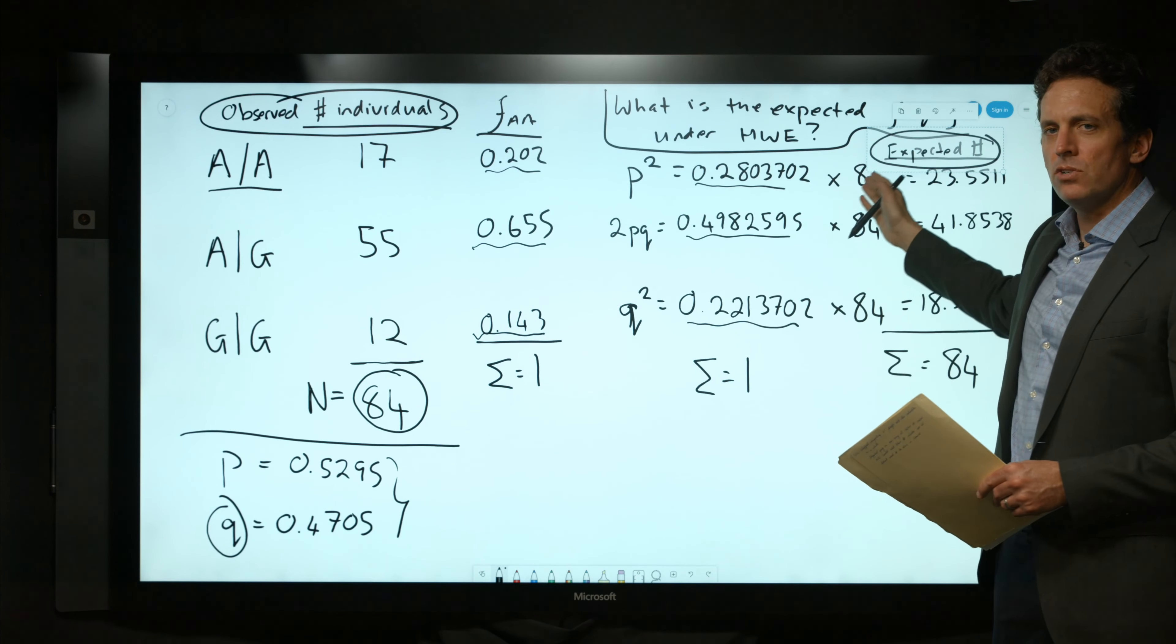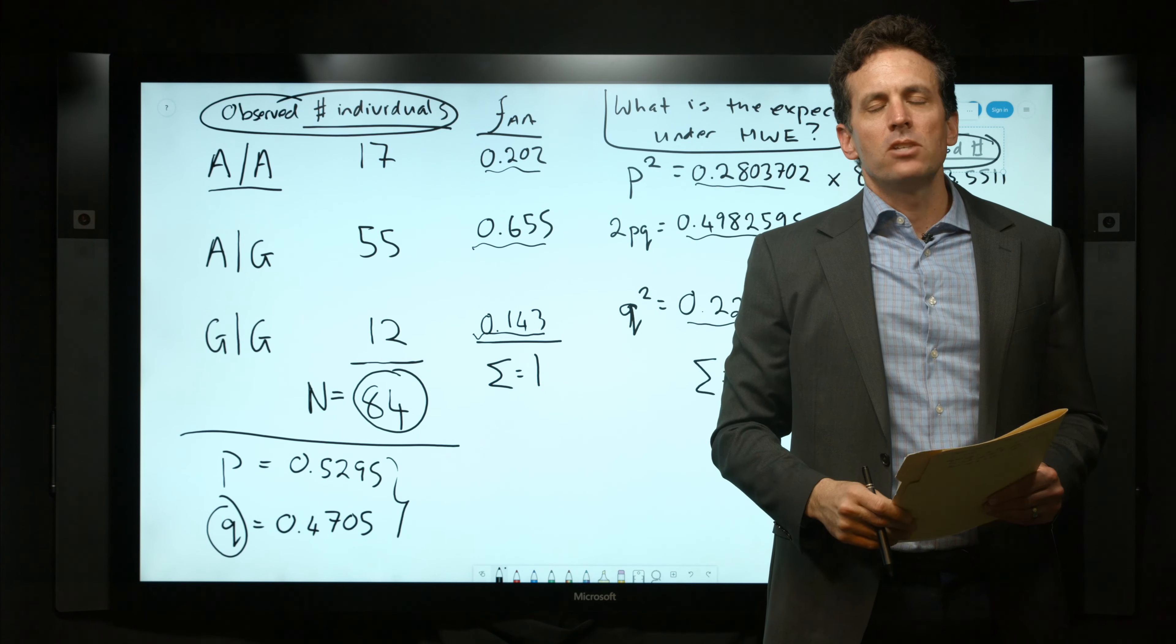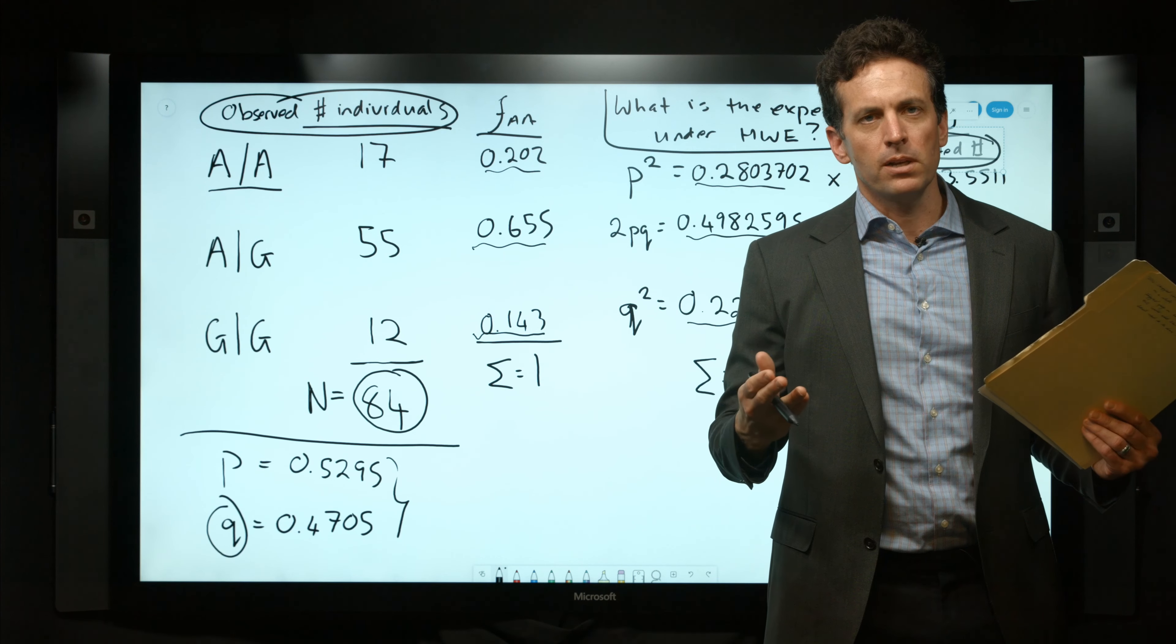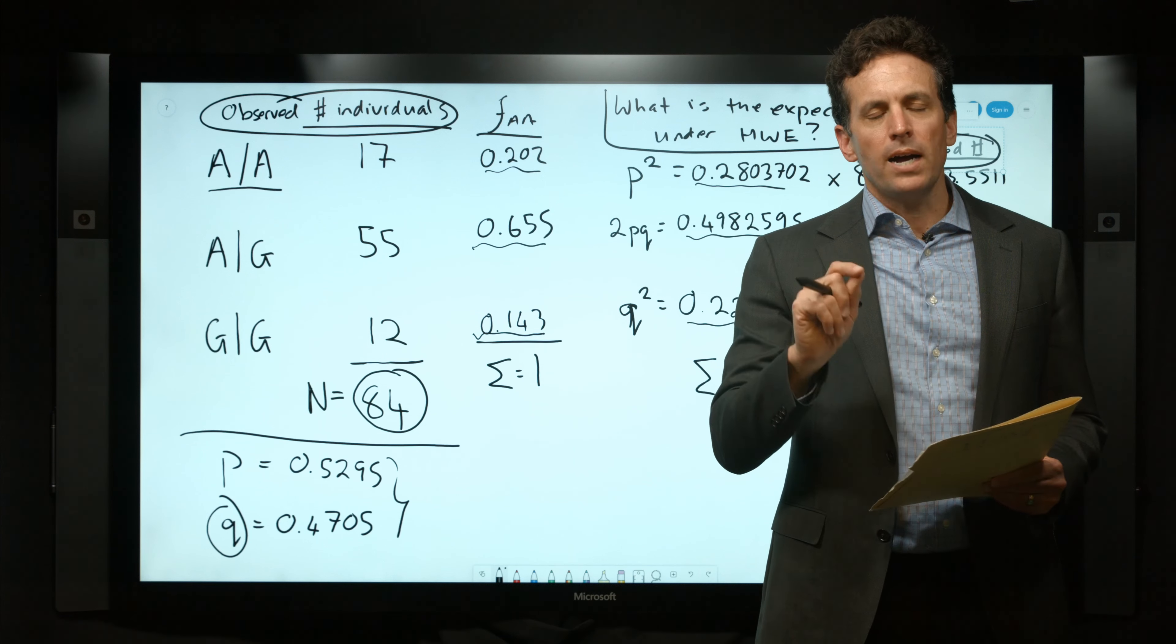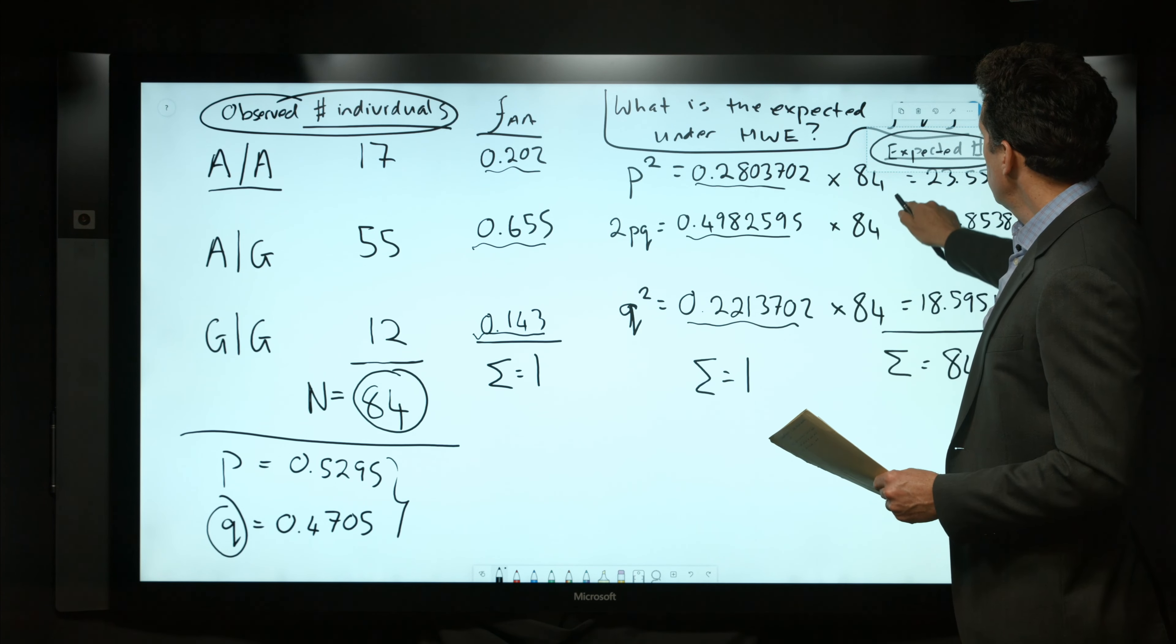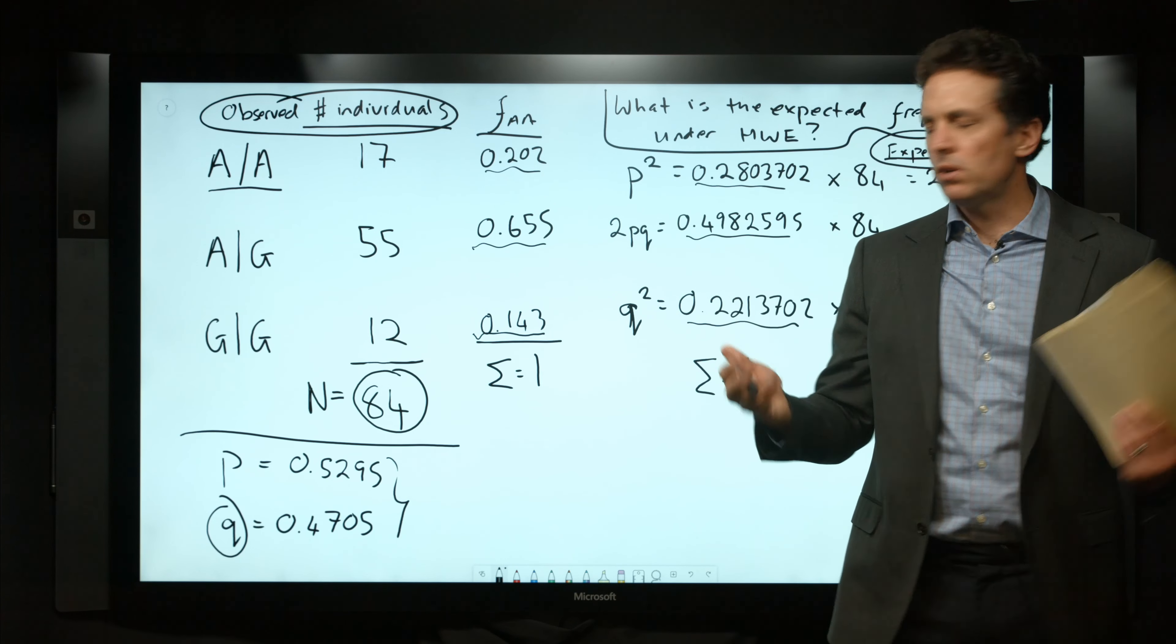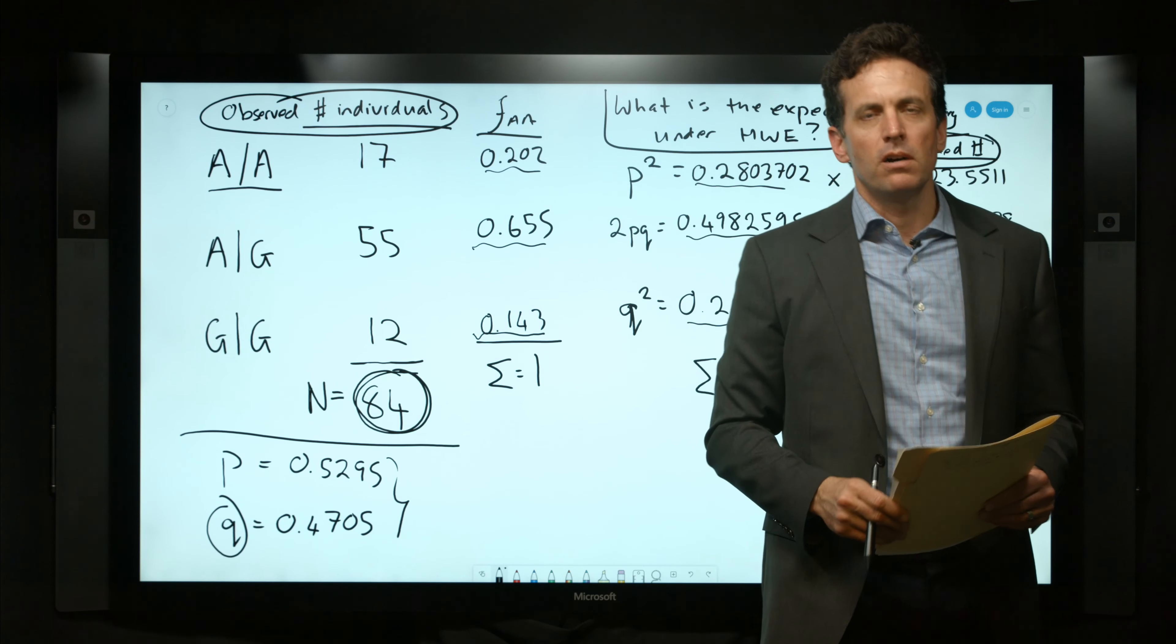I'd like you to try and compute that now for yourself, remembering the formula for the chi-square test statistic. You can use that to ask: is this population in Hardy-Weinberg equilibrium, or is this deviation between the expected and the observed number of individuals just due to the fact that we're sampling a relatively small number of individuals?